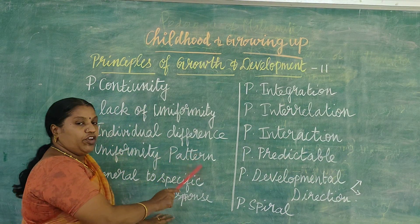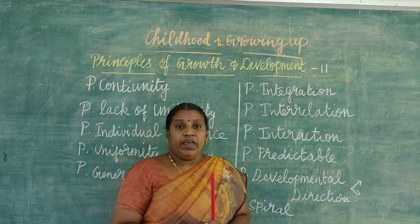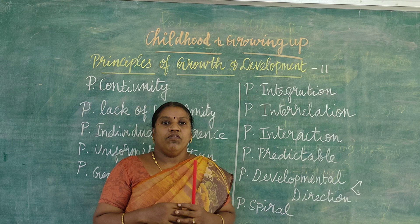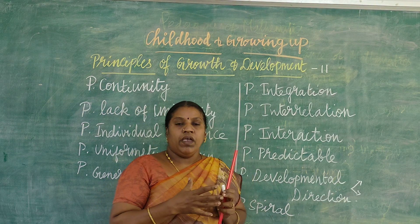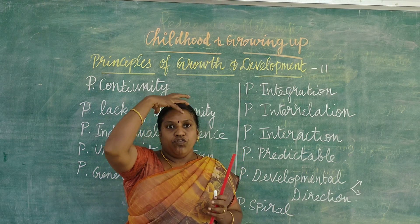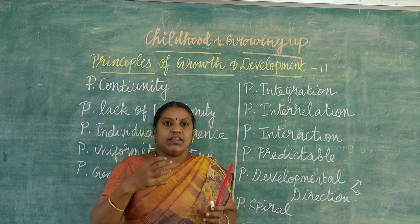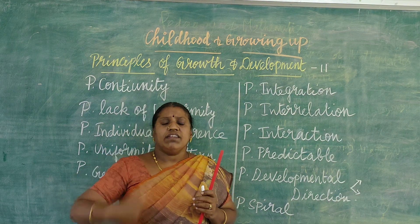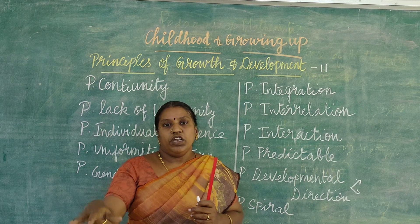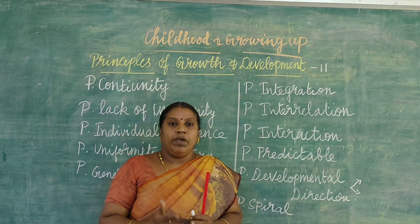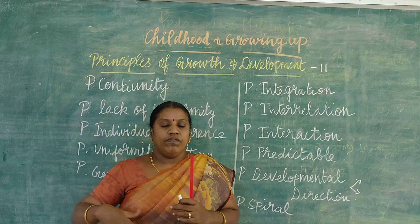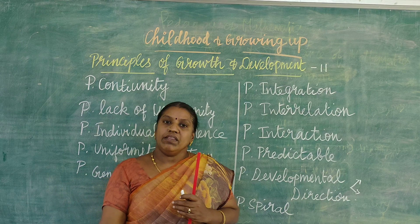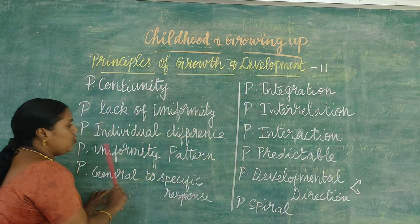Then the principle of uniformity of pattern. We are all human beings, and we have the same pattern of development in our life. For example, when you observe a newborn child, the head portion of their body is very large in size. Then, as they grow up in later years, the size of the head is reduced and the body parts' length is increased. So it is the same for everybody — that is why it is called uniformity of pattern.